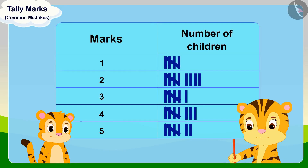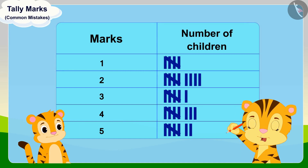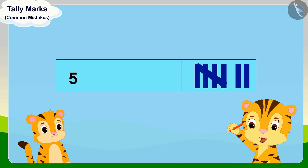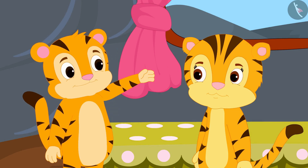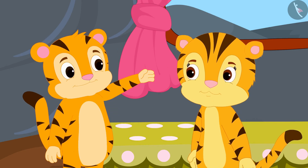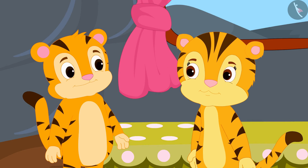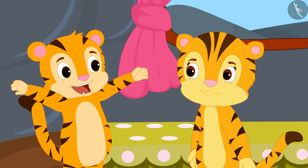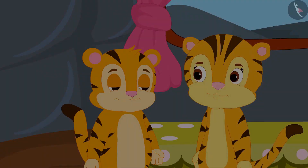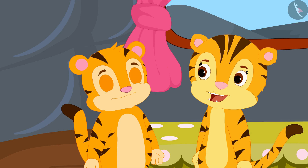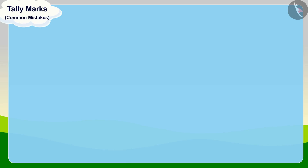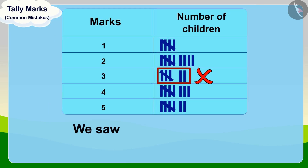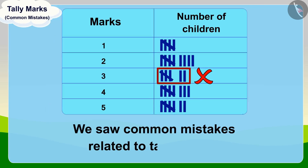Mrs. Khan said to Shere Khan, 'Look, son, seven children in your class got five out of five marks.' Upon hearing this, Shere Khan promised Mrs. Khan that next time he too will study more diligently and get the highest marks in the class. Mrs. Khan became very happy and hugged Shere Khan. Children, in this video, we saw common mistakes related to tally marks.